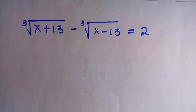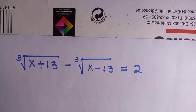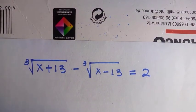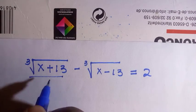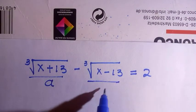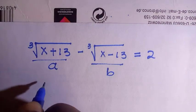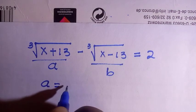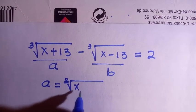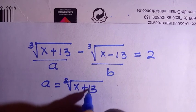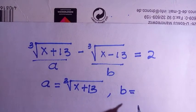Welcome to another video. Let's solve this system of equations. The first thing we are going to do is let the first expression be a particular letter — suppose I choose a — and the second one b. So we have a equals to the cube root of x plus 13.